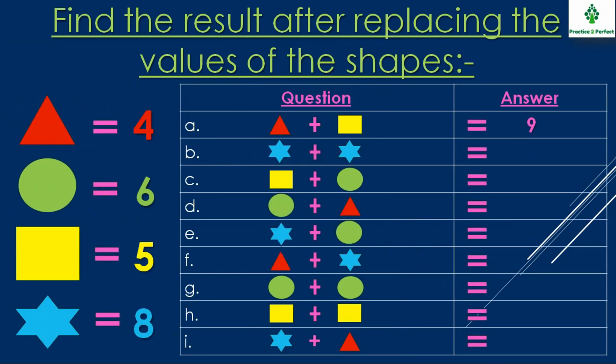This is the second question which is an addition puzzle. Here four shapes are given. On the left side you can see a triangle, circle, square and star, and each shape has a number associated with it.